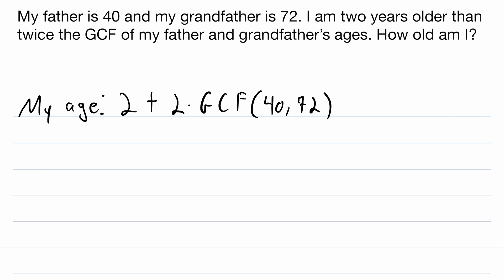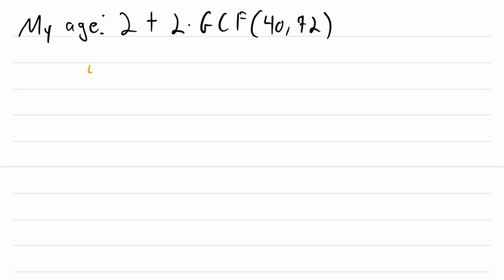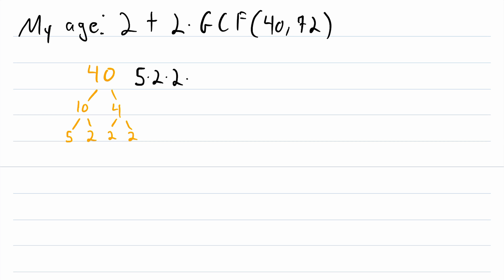In order to do that, we'll use prime factorizations, and to find those we'll need to make some factor trees. We'll start off with 40. The first factor that comes to mind is 10, which we can multiply by 4 to get 40. Then 10 breaks down into 5 times 2, and those are prime. Then 4 factors into 2 times 2, also prime. So the prime factorization of 40 is 5 times 2 times 2 times 2.